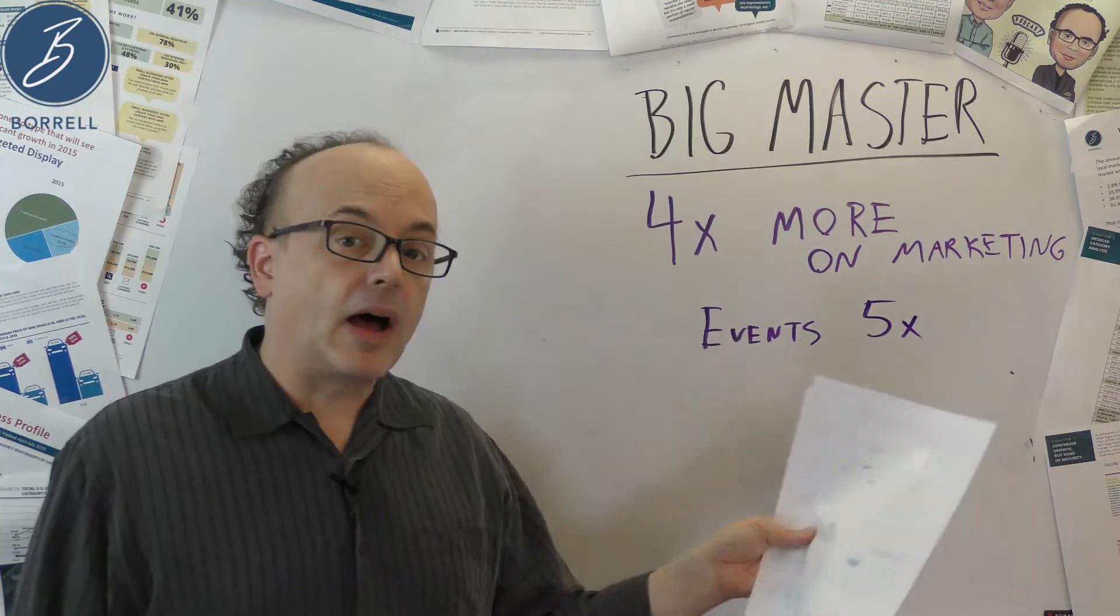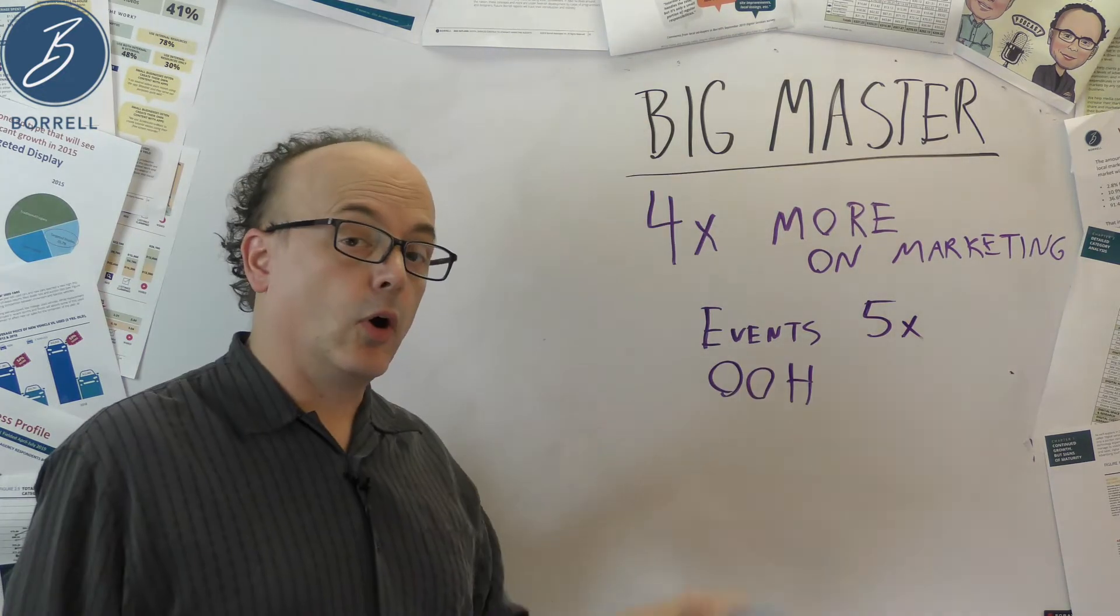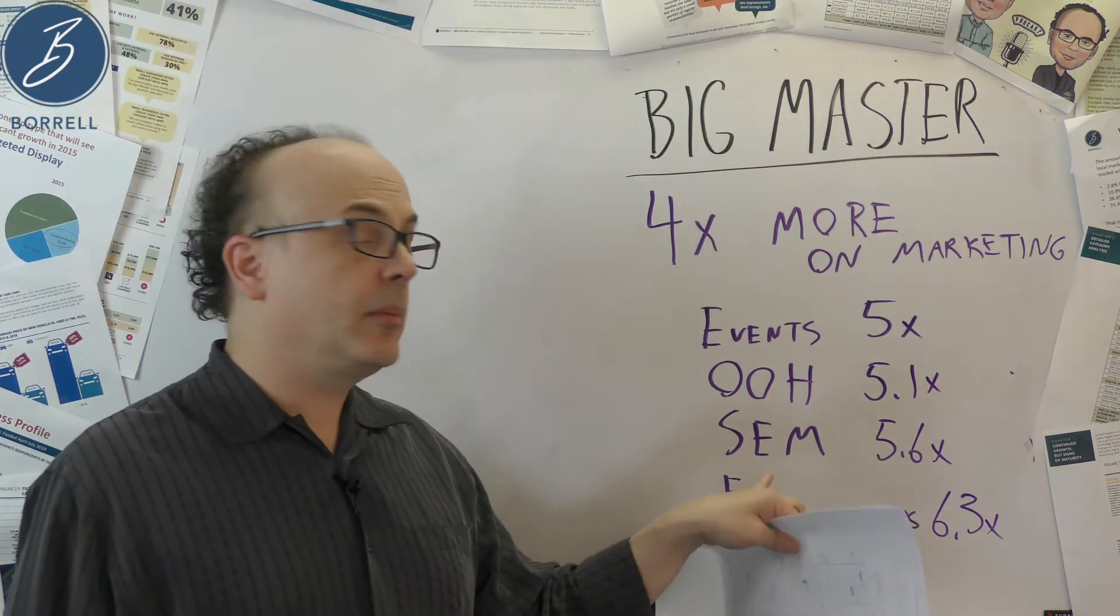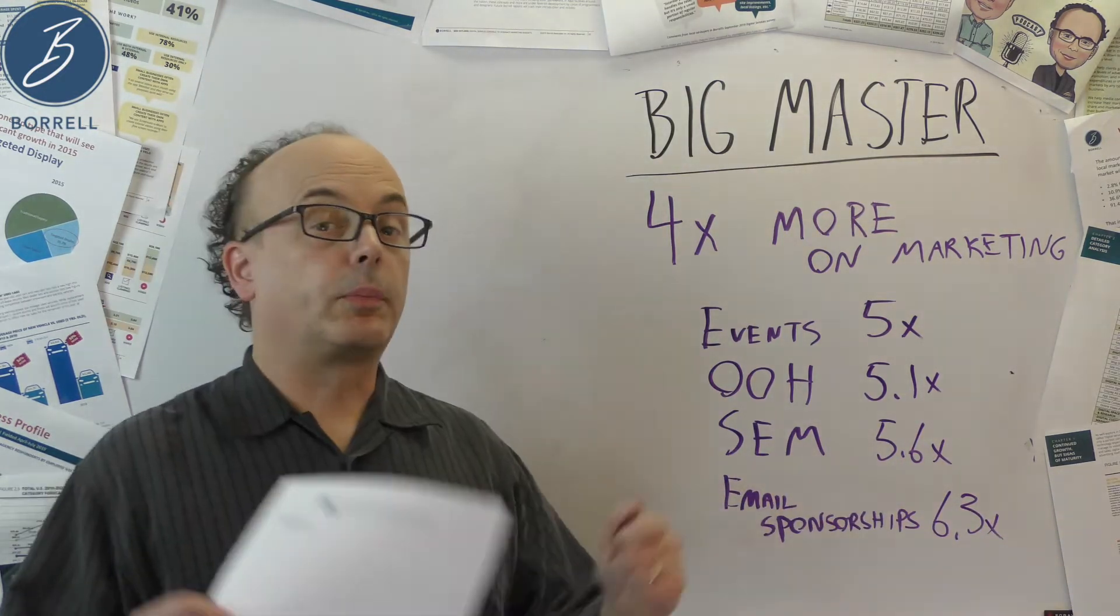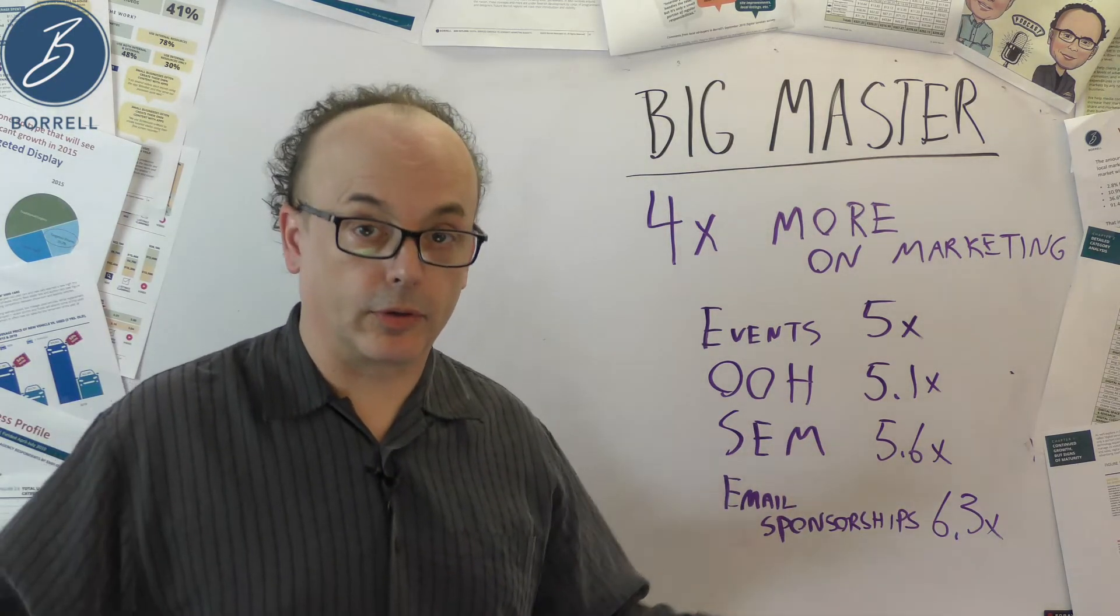Why don't I tell you? The amount they're spending on events? Five times where the big novices are. Out of home, we mentioned that before. 5.1 times. SEM, 5.6 times. Email sponsorship, 6.3 times. They're spending on more things, and they're spending more on those more things.